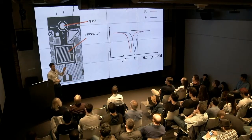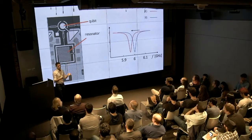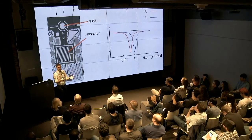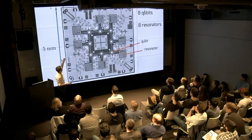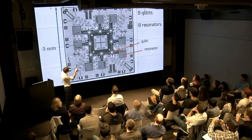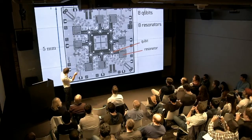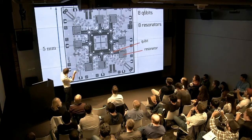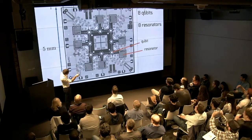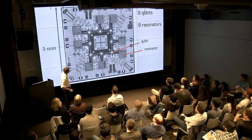Once you have one qubit and one resonator, you can put eight qubits and eight resonators all together on a chip. So this chip has eight qubits and eight resonators arranged together.